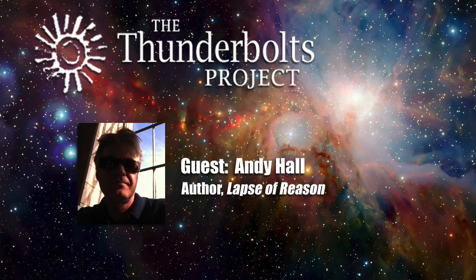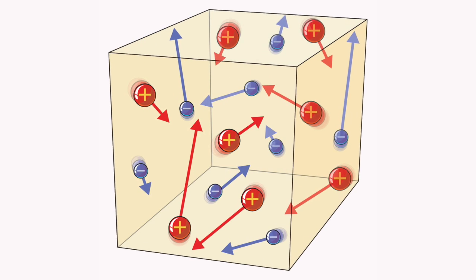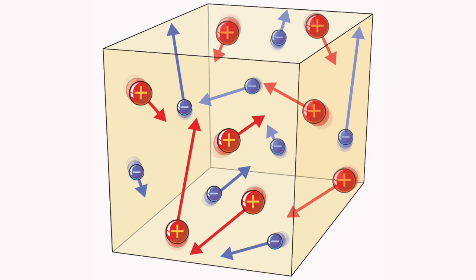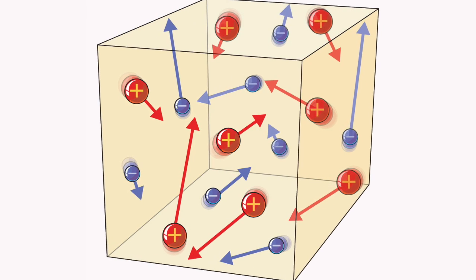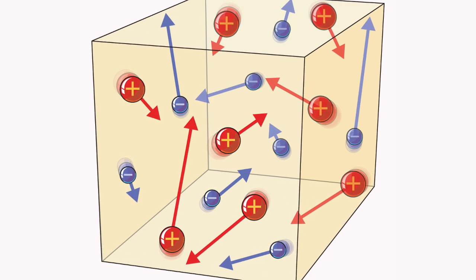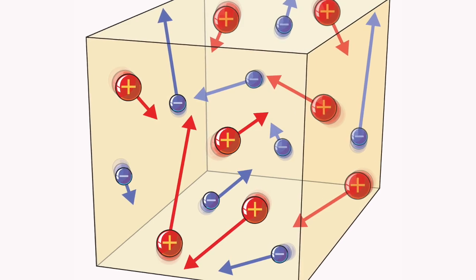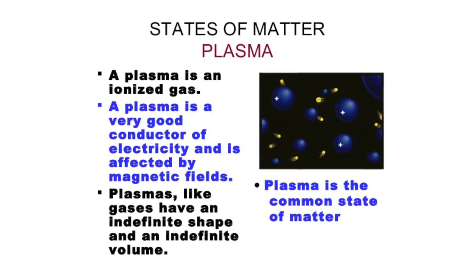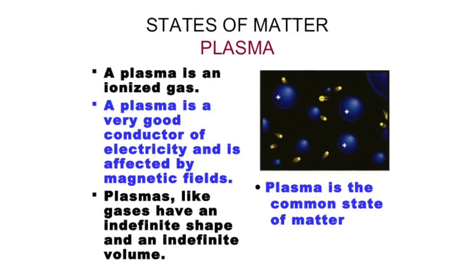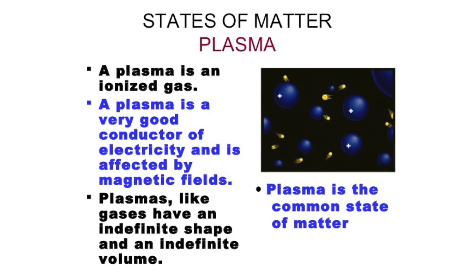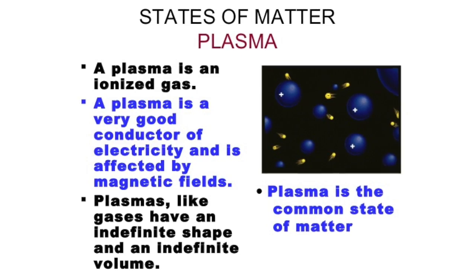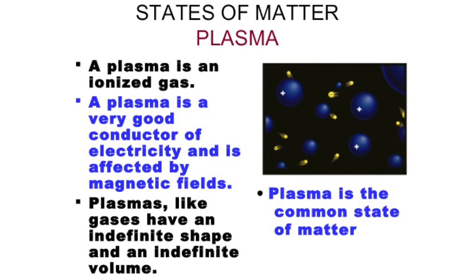For air to become plasma and carry current, the air has to be partially ionized. A plasma state can be defined by plasma density — the number of free electrons per unit volume — and the degree of ionization, the proportion of atoms ionized by loss or gain of an electron. A gas with as little as 1% of the particles ionized is a plasma, responding to magnetic fields and displaying high electrical conductivity.